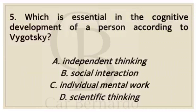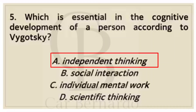Number five: Which is essential in the cognitive development of a person according to Vygotsky? Letter A: Independent Thinking. Letter B: Social Interaction. Letter C: Individual Mental Work. Letter D: Scientific Thinking. Answer: Letter A, Independent Thinking.